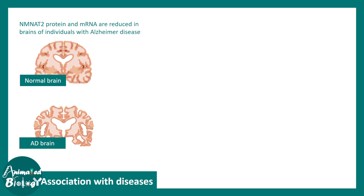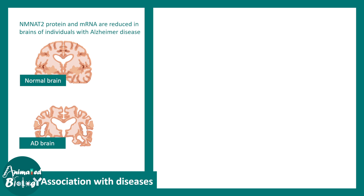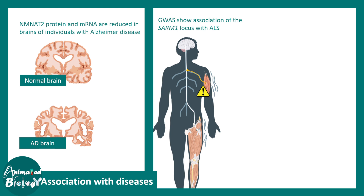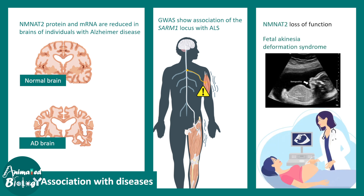Now let's see why this is important clinically. NMNAT2 protein and mRNA levels are reduced in the brains of Alzheimer's patients, who have increased susceptibility to neurodegeneration. Overall, NMNAT2 and NMN concentrations in neurons are implicated in neurodegenerative scenarios like Alzheimer's disease. Genome-wide association studies have pointed out that the SARM-1 locus is associated with ALS — amyotrophic lateral sclerosis — where motor neurons degenerate. Also, in fetal akinesia deformation syndrome, NMNAT2 loss-of-function situations have been identified. Several neurodegenerative diseases are well associated with NMNAT2 or SARM-1 levels.